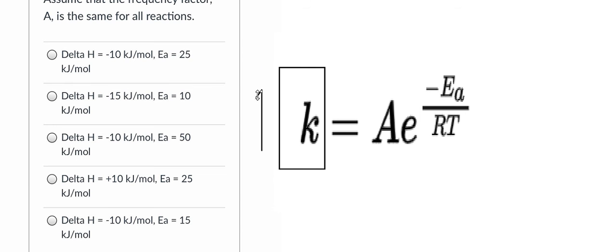Ea should be the smallest because we have the negative next to Ea in the equation. This way we can get the greatest k. In the multiple choice options, the smallest Ea is 10 kJ/mol.